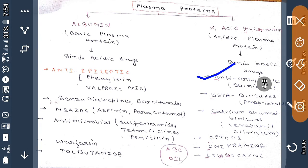Then beta blockers, one example is propranolol, will also bind to alpha-1 acid glycoprotein. Then calcium channel blockers such as verapamil and diltiazem, opioids, imipramine, and lignocaine. A mnemonic for this is ABCOIL: A for antiarrhythmic, B for beta blocker, C for calcium channel, O for opioids, I for imipramine, and L for lidocaine.